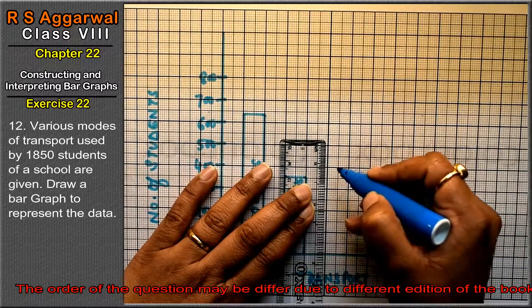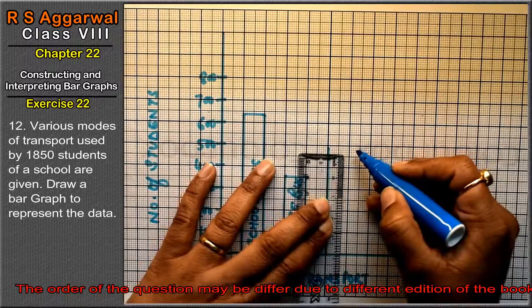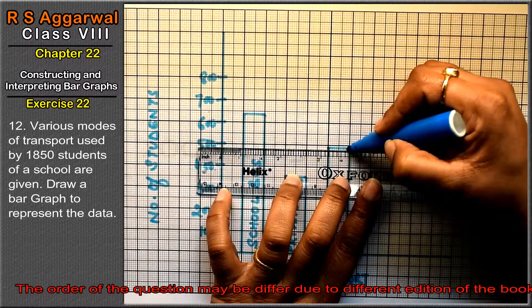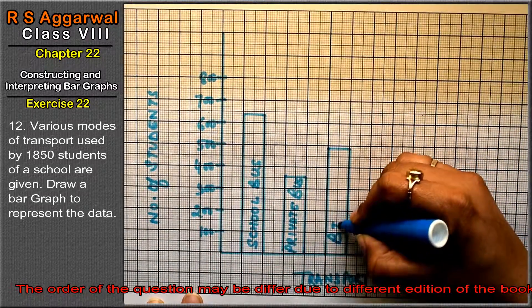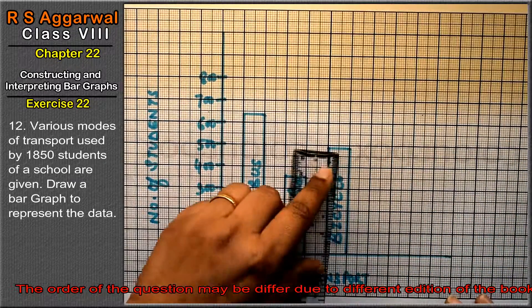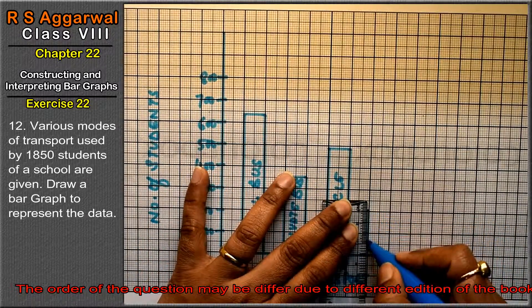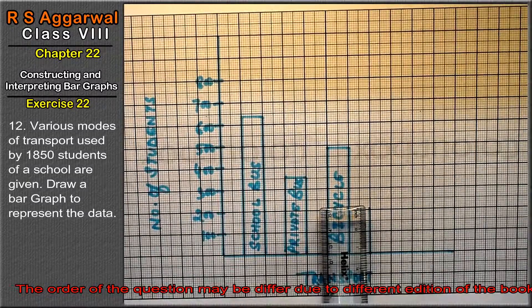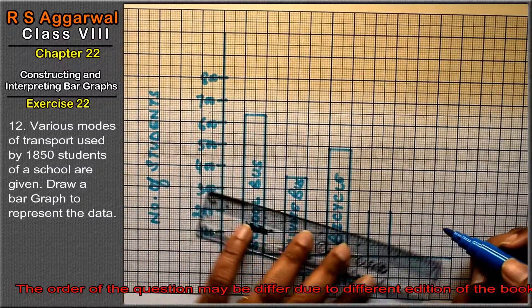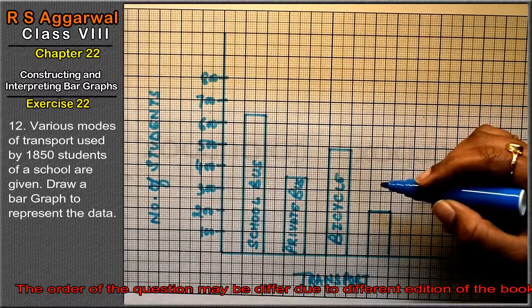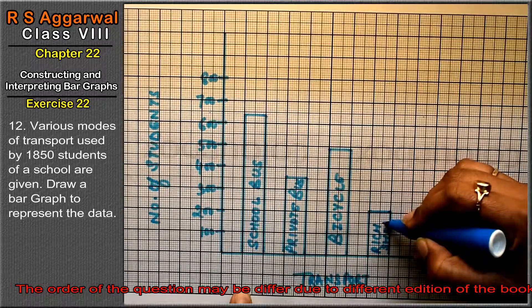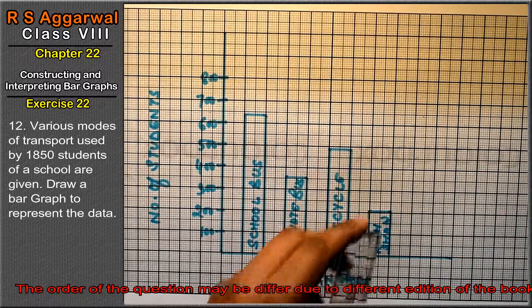Then bicycle is 49: 1, 2, 3, 4 and 9. Aur iske liye 1 block neeche. Ye aa gaya Bicycle. Next is rickshaw 21 blocks. Ye aa gaya rickshaw. Next is by foot 15 blocks.